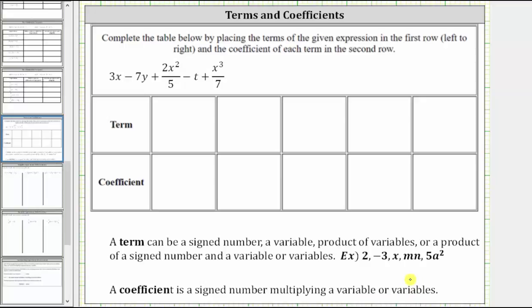To help us identify the terms and coefficients, let's rewrite the subtraction as addition and also change the form of some of these terms. So the given expression is equal to three x. Let's write minus seven y as plus negative seven y. Remember, subtracting a positive is equivalent to adding a negative. Then we have plus two x squared divided by five. Let's rewrite this as two fifths times x squared, which is just two fifths x squared.